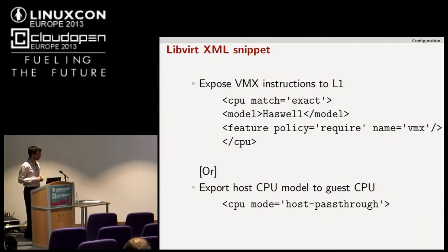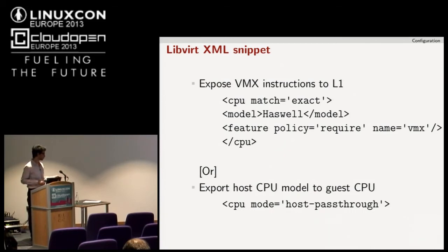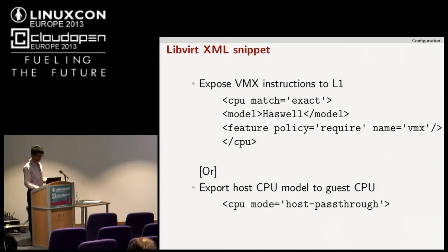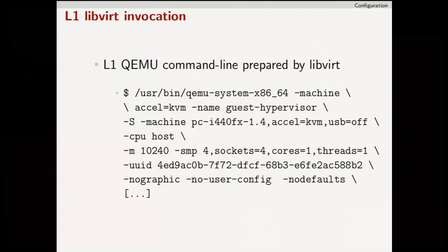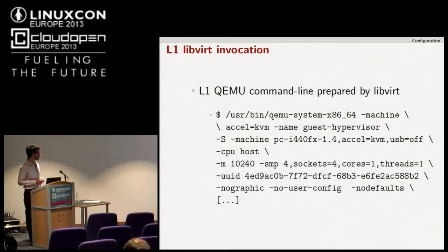To expose the VMX instruction set to the L1 hypervisor, you can use a LibVirt XML snippet like that. Or you can expose the complete host CPU model using host pass-through. However, this will create problems when doing live migration, because the target host should also be of the same architecture.